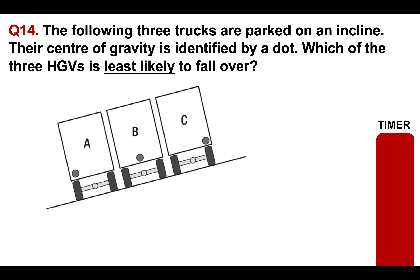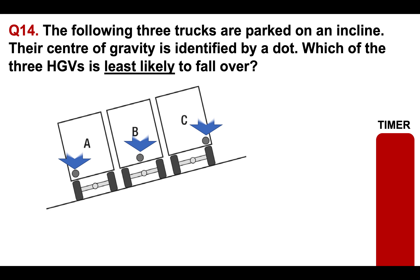Question 14 is a slightly different one. The following three trucks are parked on an incline. Their center of gravity is identified by a dot — that's the center of gravity for each one of the trucks A, B, and C. Which of the three HGVs or trucks is least likely to fall over? A, B, or C? Put your answer in the comments section below.